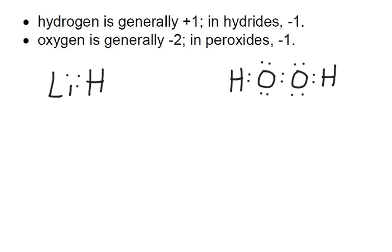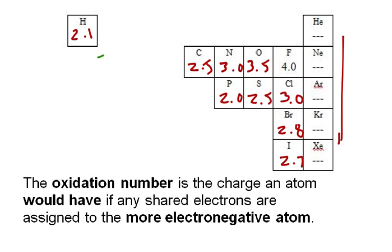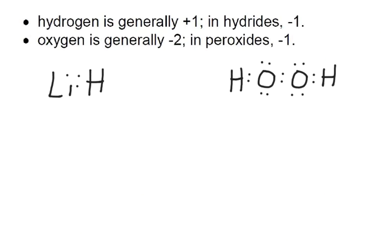Hydrogen is usually plus 1 in its compounds because at 2.1, it's lower in electronegativity than most non-metals we encounter in covalent compounds, so hydrogen loses its electron and has a plus 1 charge. But in hydrides — like lithium hydride — family 1, 2, and 3 metals are so low in electronegativity that they lose the electrons. So hydrogen in hydrides must be minus 1: lithium would be plus 1 and hydrogen would be minus 1.